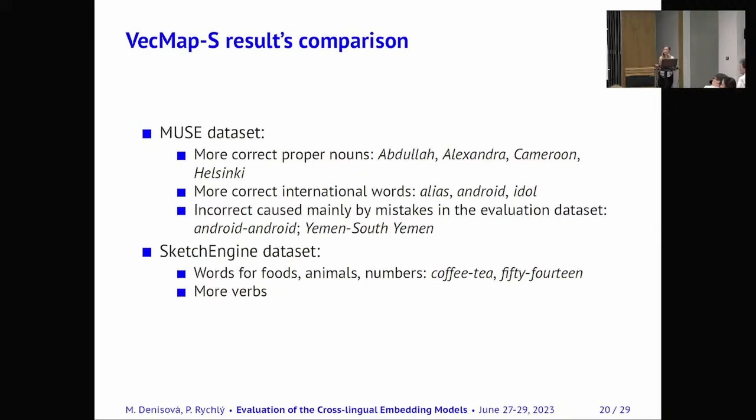And these were a huge part of the dataset and incorrect word pairs were mainly caused by the mistakes in the evaluation dataset. So for example there was word pair android, android which is obviously not a Korean word. And for example Yemen was translated as South Yemen so that was also a mistake from the evaluation dataset. And Sketch Engine contained more basic vocabulary words such as foods, animals and numbers and this model was mainly able to find lexically semantically related words such as for coffee it found tea or for 50 it found 14. And it contained more words and words were the most complicated word group to find an equivalent for.